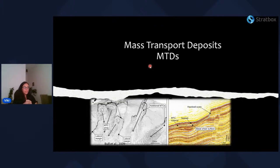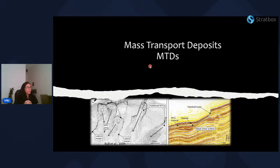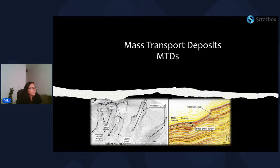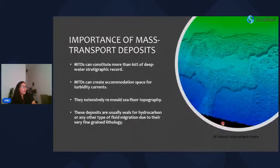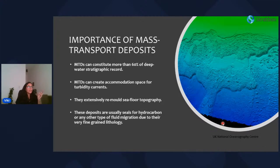Mass transport deposits (MTDs) are the deposits of submarine landslides. MTD is a term used to classify different cohesive flows such as slides, slumps, and debris flows, varying in size up to thousands of cubic kilometers and greater than 200 meters thick. They constitute more than 60% of the deep-water stratigraphic record, can create accommodation space for subsequent currents, remodel seafloor topography, and because they are very fine-grained, they are very good seals in hydrocarbon reservoirs.